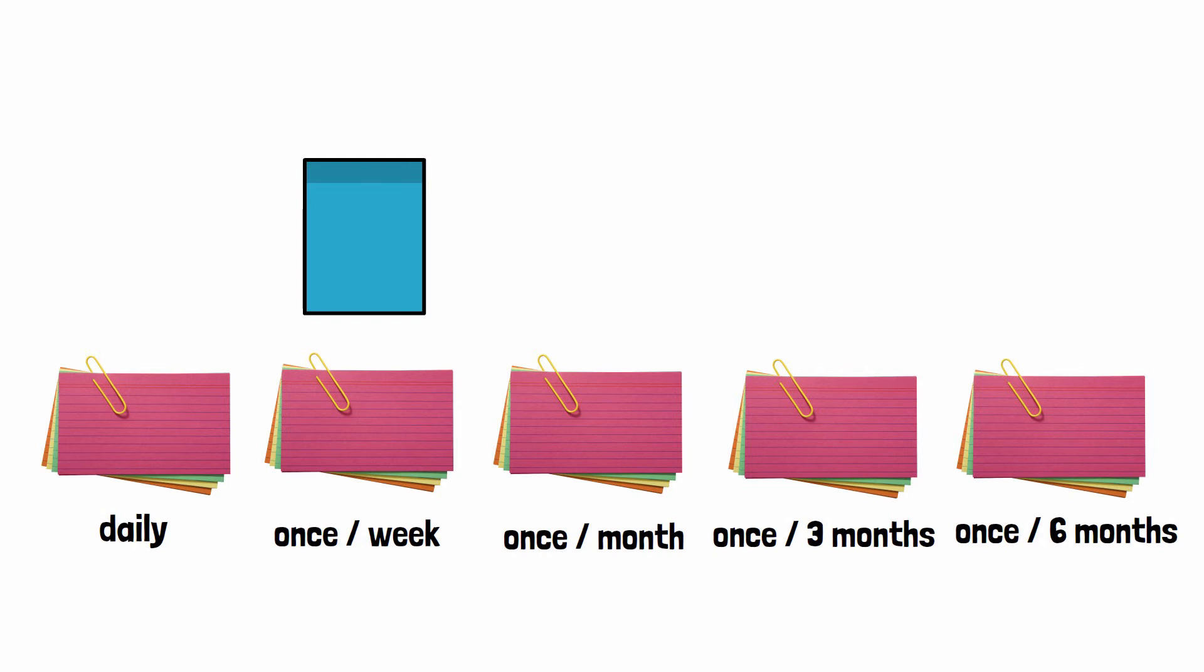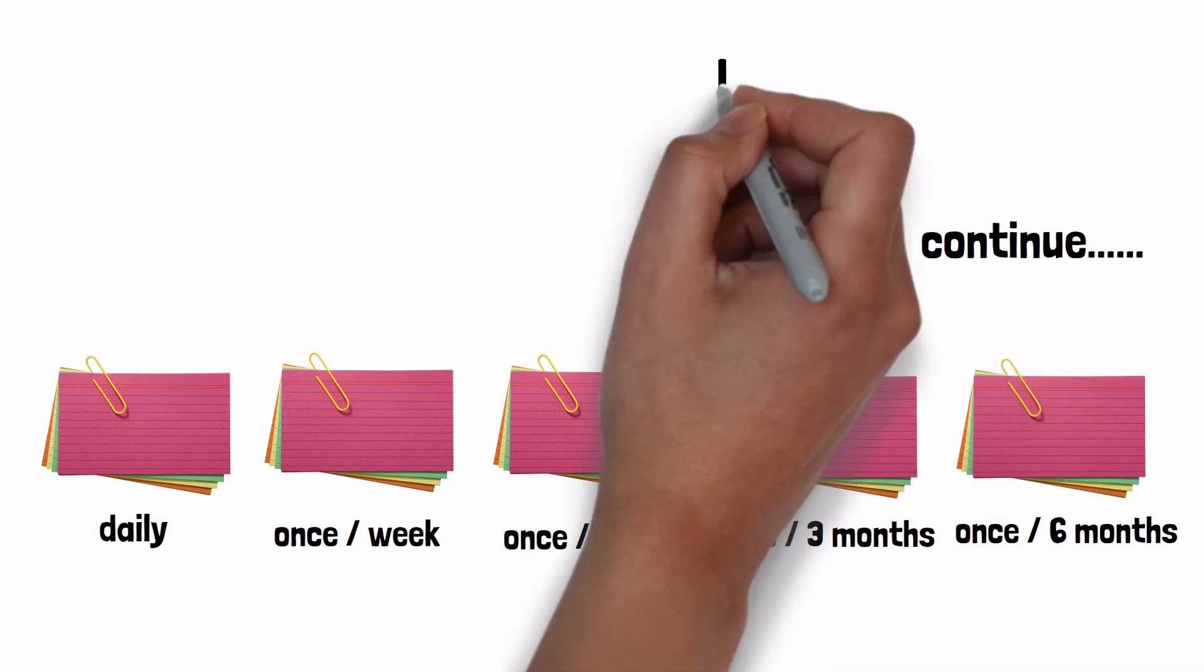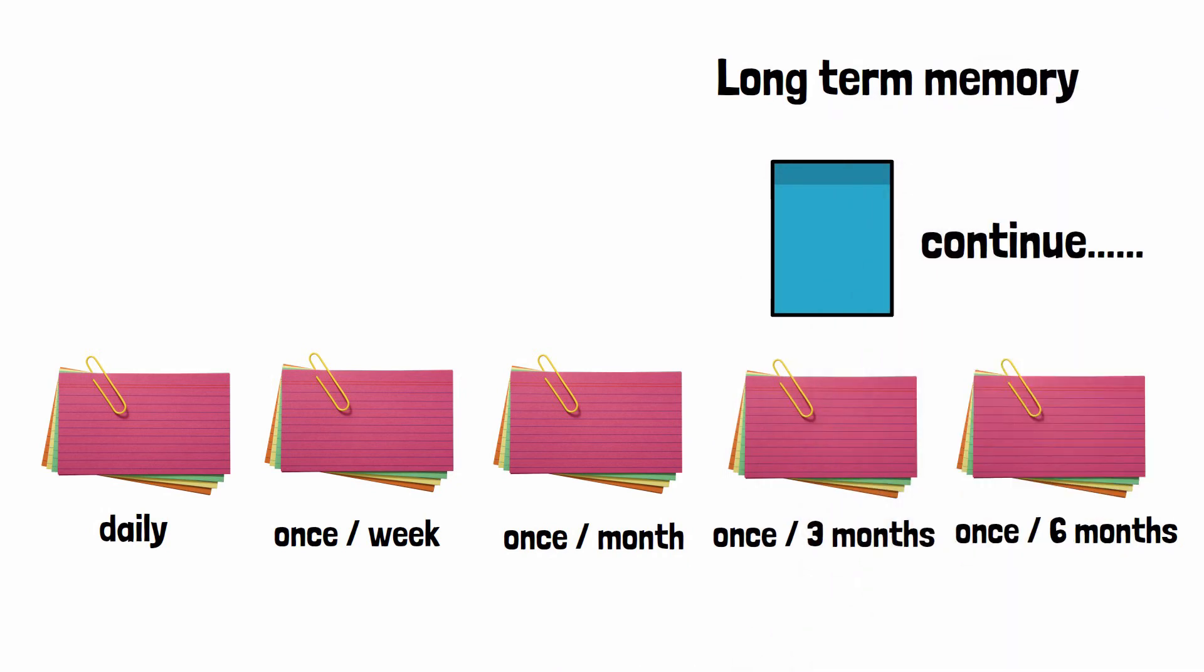If the information is readily available to you, move the card to once a month grouping and revise it after one month. You continue this process until the information is permanently moved into your long-term memory, and by that time you may not need to revise it again. But in any of the revisions, if you find that you can't recollect the information even after much effort, then you move the card to the first grouping of the daily cards and you repeat the whole process again. This process will transfer the information into your long-term memory.